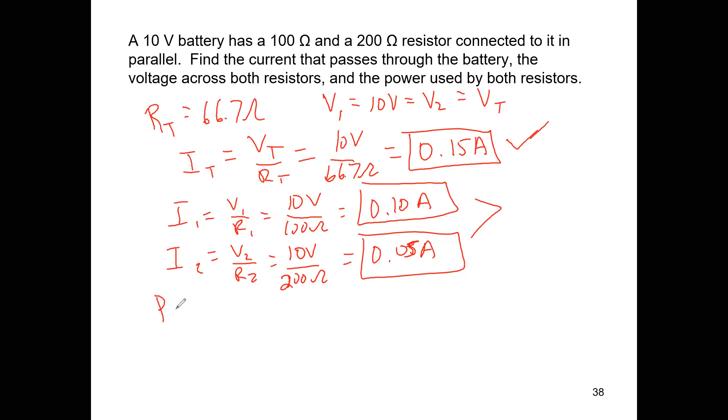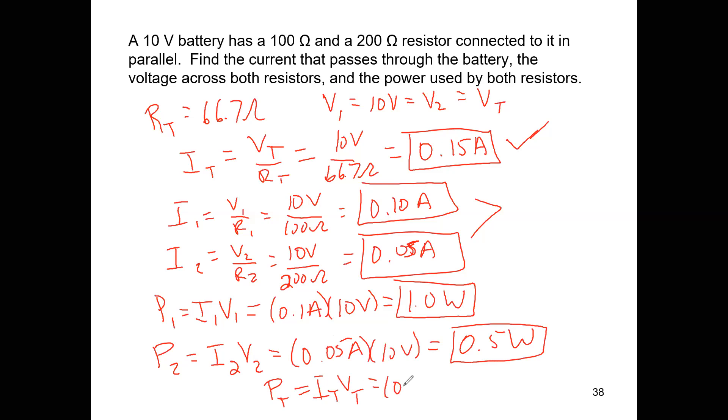The last thing we've got is the power used up by both resistors. We can just pull out the P equals IV equation. Multiply the appropriate things together. We get one watt for the first one. For the second one, we get half a watt. And if we were to figure out the total power, that would be I total times V total, which is 0.15 amps times 10 volts, that's 1.5 watts, and that checks out as well.